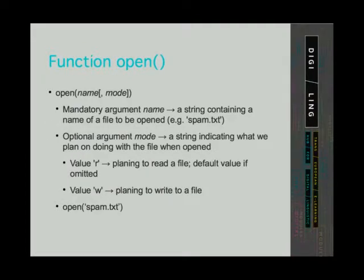The open function takes one mandatory argument name and one optional argument mode. The mandatory argument name is a string containing the name of the file to be opened and manipulated. For example, we can create a text file named spam, that is spam.txt.